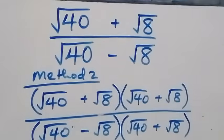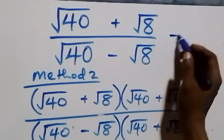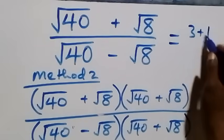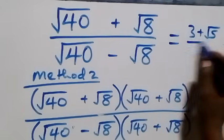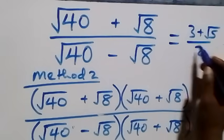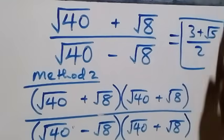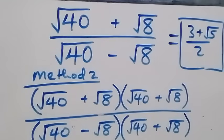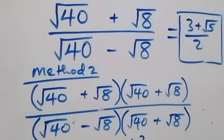Therefore, the simplified form is simply three plus root five over two. Thank you for watching. Don't forget to subscribe for more videos and turn on the notification bell. Share this video, give it a thumbs up, and put your comments. See you next class, bye for now.